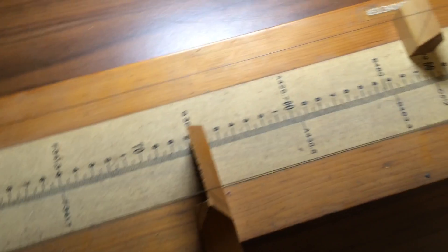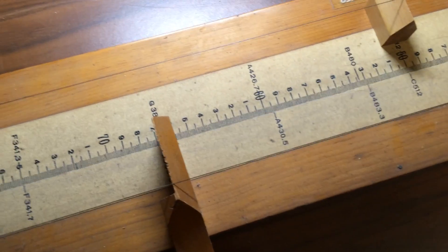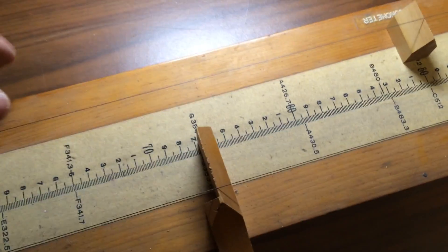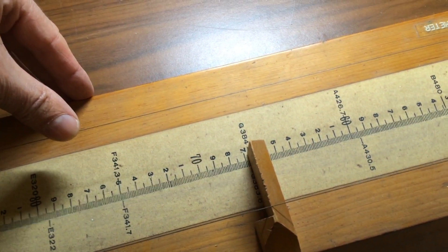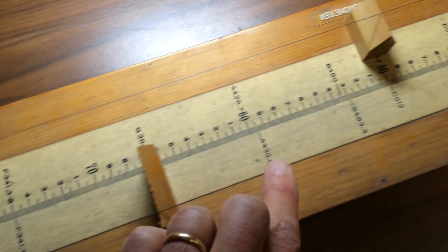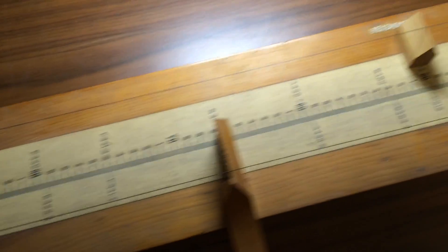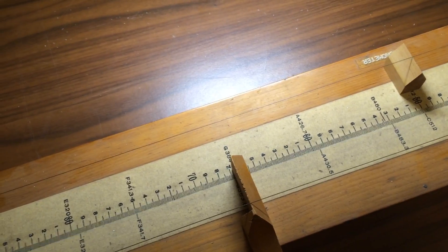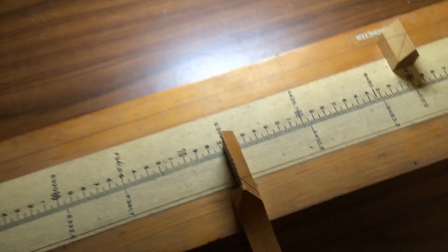And what the ancient Greeks noticed is these two notes sound good together, and they go well with the octave note. So those notes together sounded good to the ancient Greeks, and they used that as the basis of their scale system.